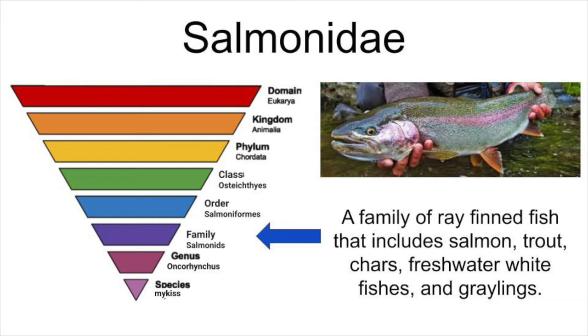Trout are part of the family salmonids, which also include salmon, chars, freshwater whitefish, and graylings.